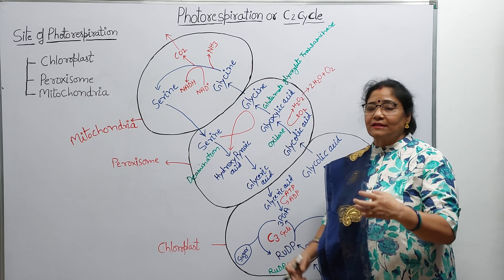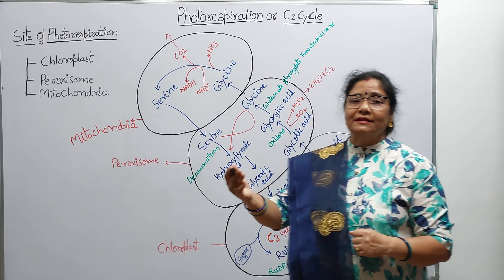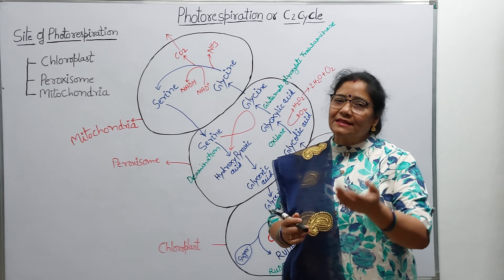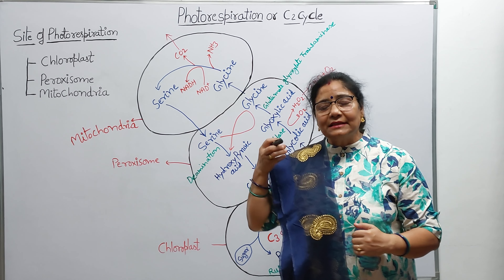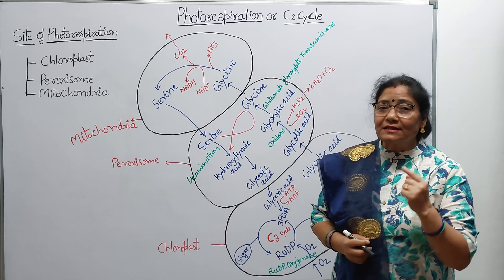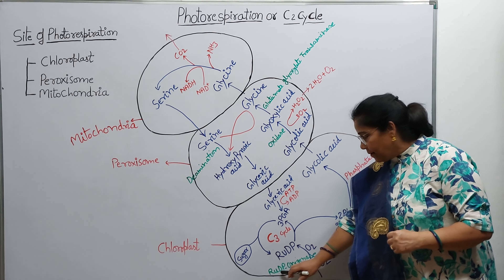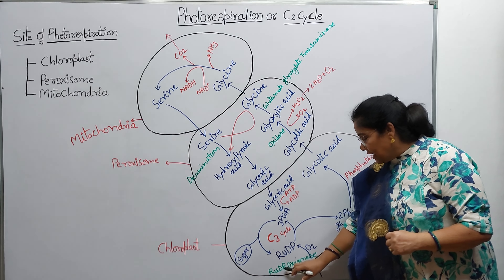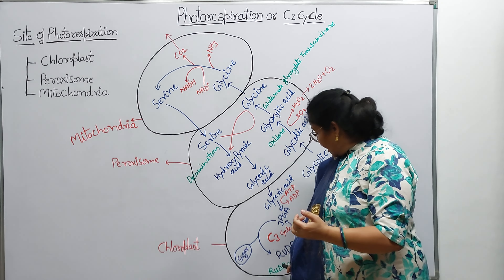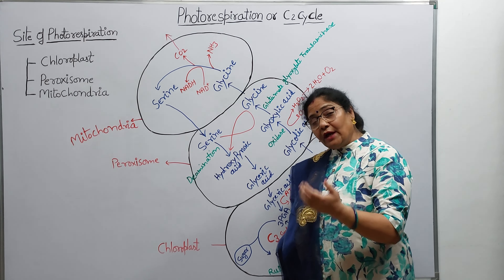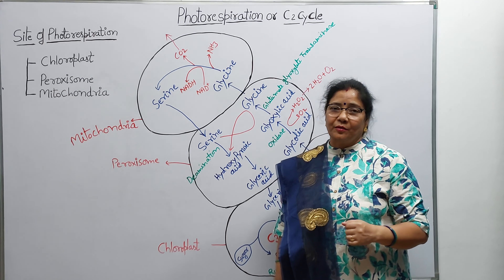Aur jab atmosphere mein carbon dioxide ka concentration kam ho jaye, oxygen ka concentration badh jaye, tab apni property badal deta hai — tab iske active site par oxygen aakar judh jata hai. Aur aise condition mein is enzyme ko hum ribulose diphosphate oxygenase kehte hain. Yani ki RuBisCO enzyme hume do forms mein dikhai deta hai — carboxylase ke roop mein aur oxygenase ke roop mein.